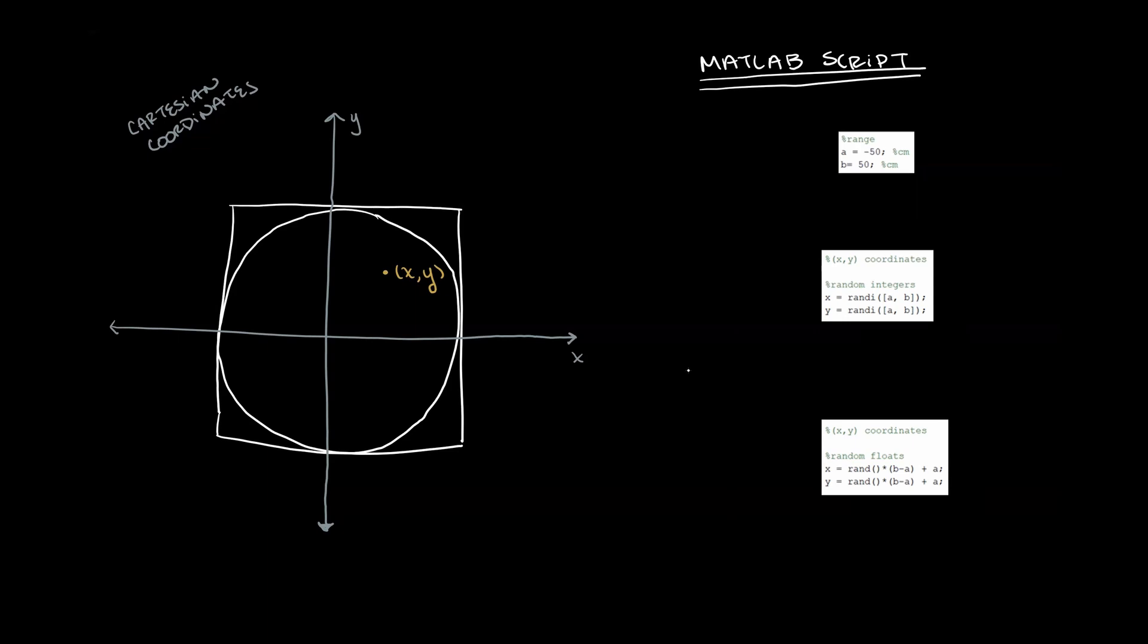Well, how do we know the coordinates of where the dart lands? MATLAB actually has a function that will generate a random number for you. In MATLAB, you just need to specify the range in which you'd like the random number to fall. Since the square intersects negative 50 and positive 50 on both the x and the y axes, we can specify the same range for the x and y coordinates. Recall that the circle has a radius of 50 centimeters, and the circle is inscribed perfectly snug inside of the square.